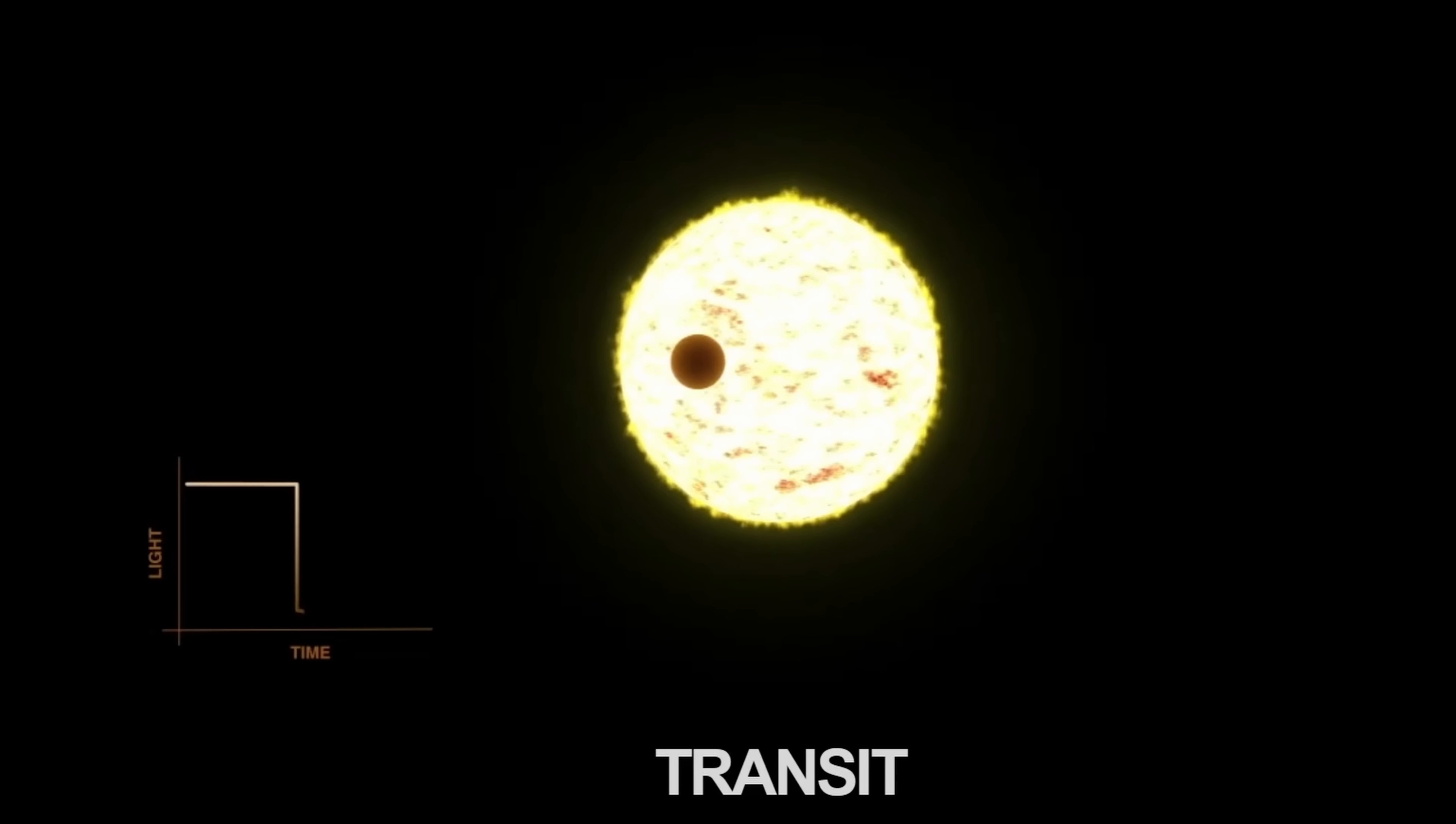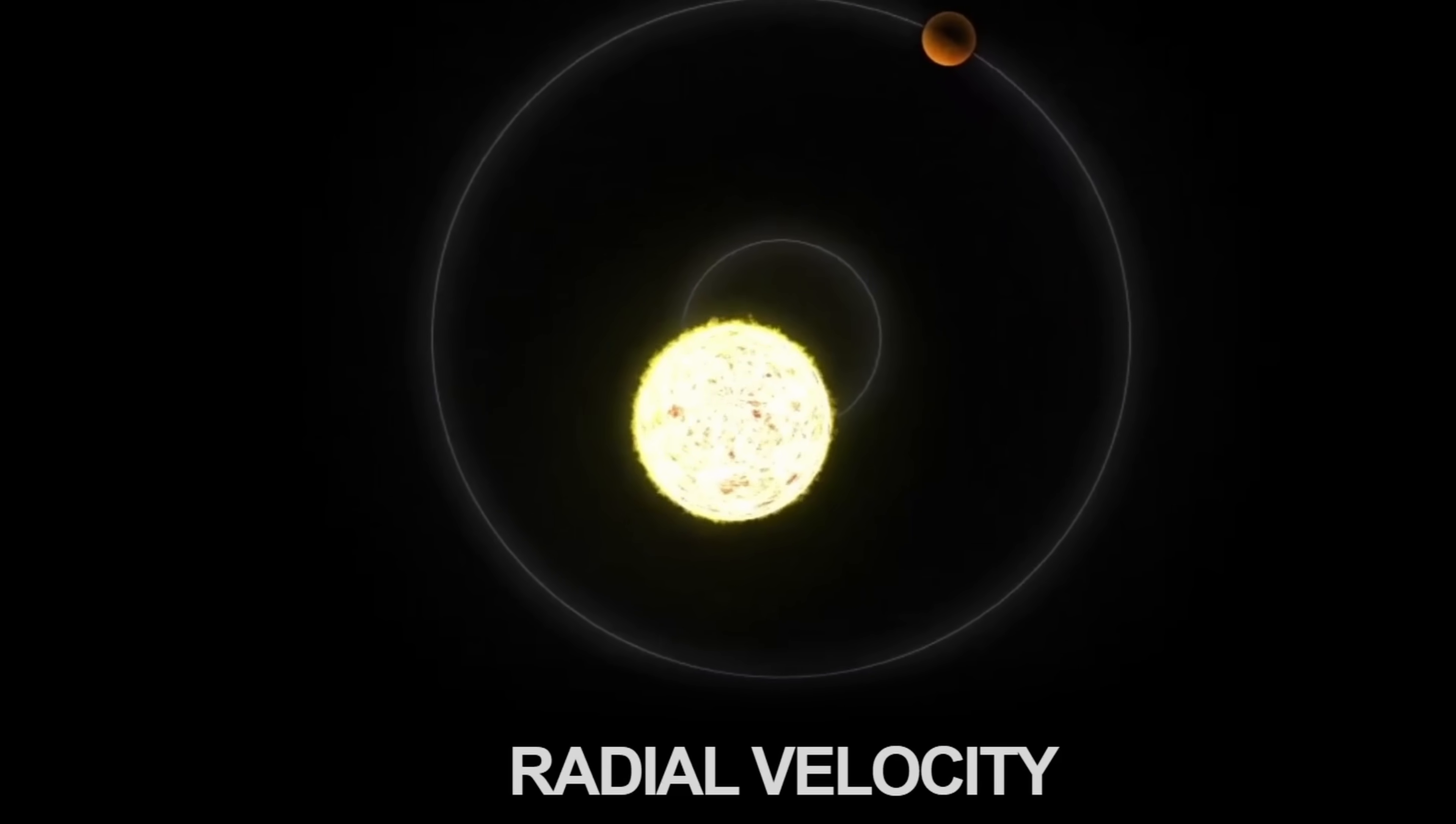It's hard to know for sure because we've never really seen a transit of this planet, so we don't really know its exact size. As a matter of fact, this planet was discovered by measuring what's known as radial velocity.